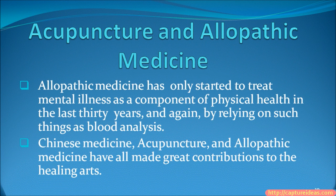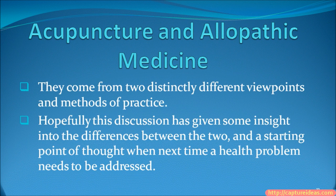Allopathic medicine has only started to treat mental illness as a component of physical health in the last 30 years, and again by relying on such things as blood analysis. Chinese medicine, acupuncture, and allopathic medicine have all made great contributions to the healing art. They come from two distinctly different viewpoints and methods of practice. Hopefully, this discussion has given you some insight into the differences between the two, and a starting point for thought when next time a health problem needs to be addressed.